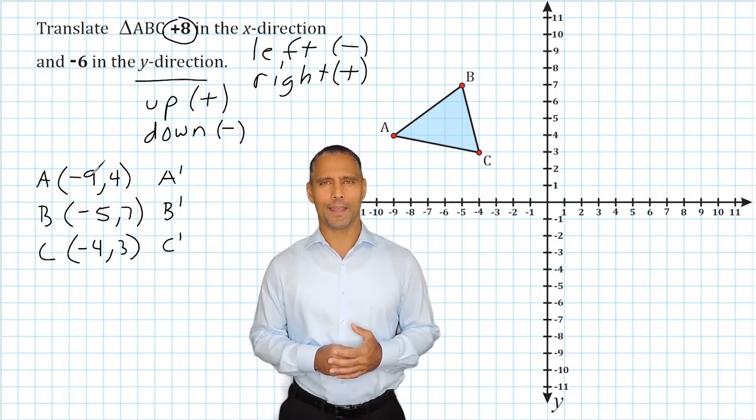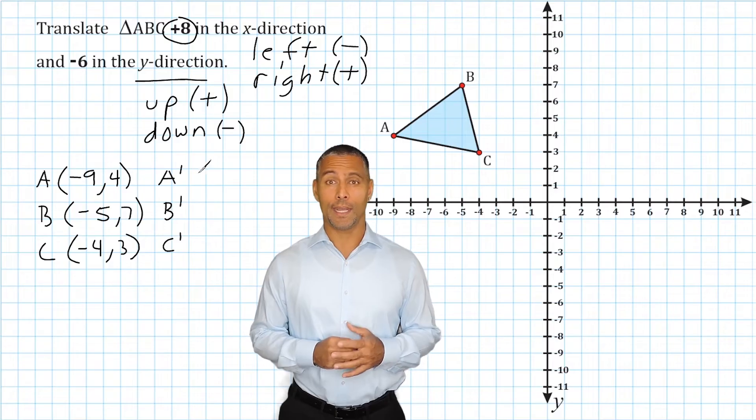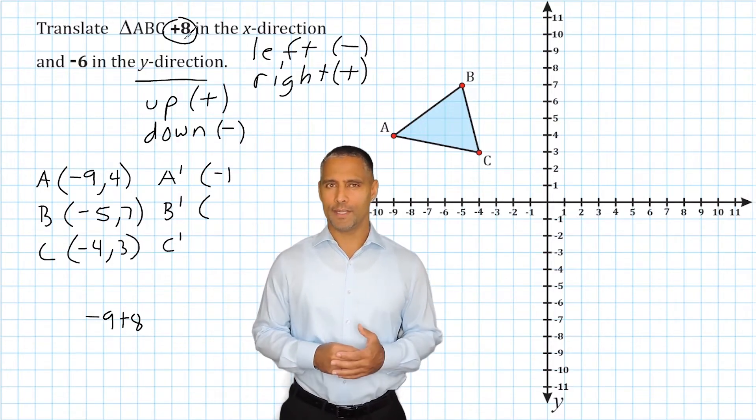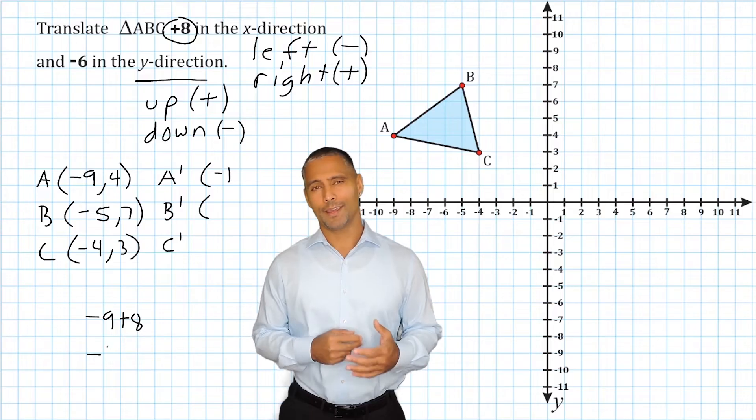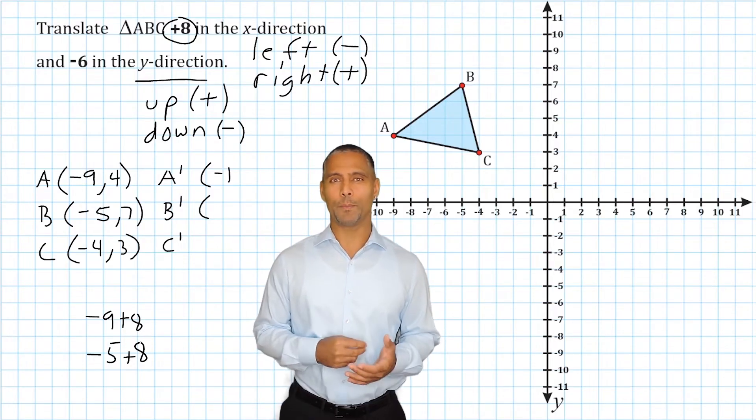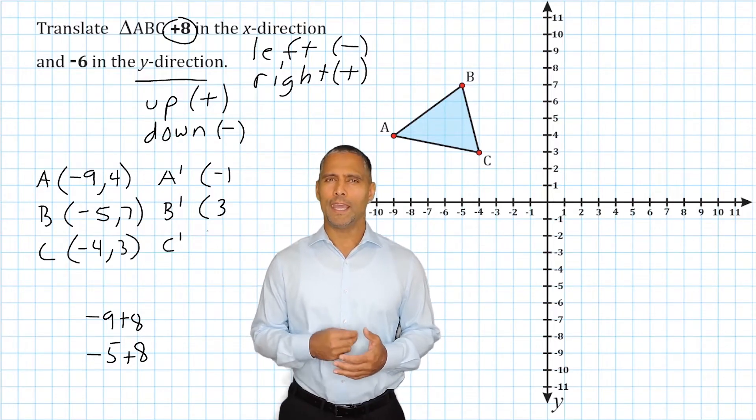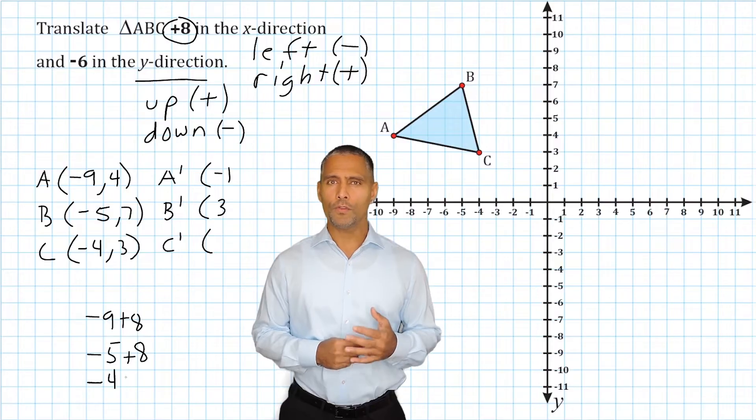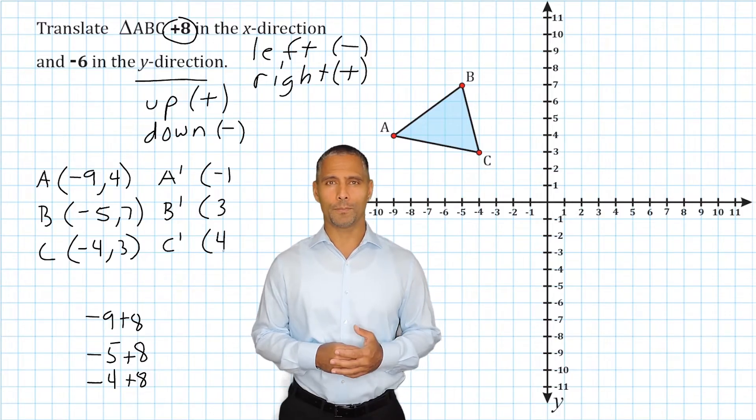So let's start with negative 9. If we take negative 9 and add that to 8, that gives us a result of negative 1. Let's add positive 8 to negative 5. Negative 5 and positive 8 is equal to positive 3. And now we have to take negative 4, our last x-value, and also add that to 8. Negative 4 and positive 8 is equal to positive 4.